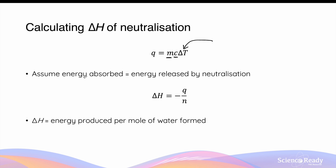If we assume that the energy absorbed by the solution is exactly equal to the energy released by neutralization, we can use Q in this equation to find the enthalpy change of neutralization. This is done by dividing Q by N, where N is the number of moles of water, because the enthalpy change of neutralization is defined as the energy produced per mole of water formed.